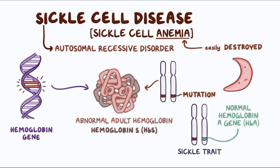These sickle cells can then get stuck in small blood vessels, causing blockages and reducing blood flow to organs and tissues, resulting in pain, organ damage, and an increased risk of infections. SCD is an inherited condition passed down from parents to their children through their genes. To develop SCD, a person must inherit two copies of the mutated HBB gene, one from each parent. People who inherit only one copy of the mutated gene have sickle cell trait and are typically asymptomatic but can pass the trait on to their children.